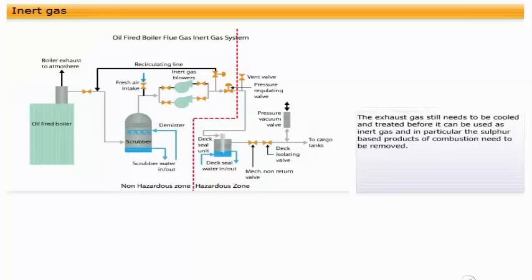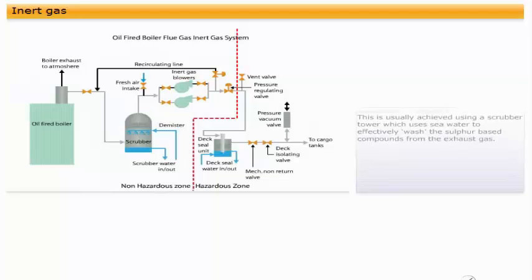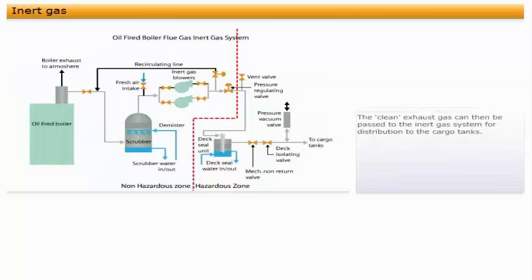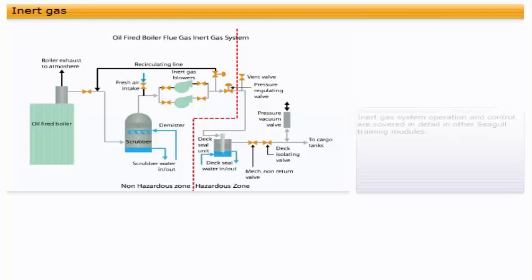This is usually achieved using a scrubber tower, which uses seawater to effectively wash the sulphur-based compounds from the exhaust gas. The clean exhaust gas can then be passed to the inert gas system for distribution to the cargo tanks. Inert gas system operation and control are covered in detail in other Seagull training modules.